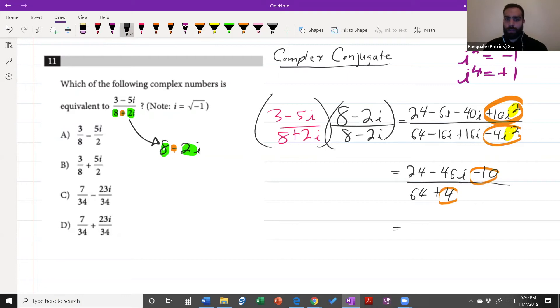And also just in case some students didn't see it, the negative 16i plus 16i is going to cancel out from a step before. Yep, so those cancel, and you got 64 plus 4 on the bottom, so 68 on the bottom, and 14 minus 46i.